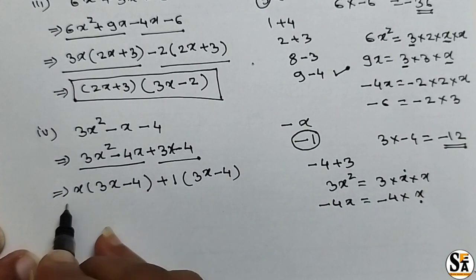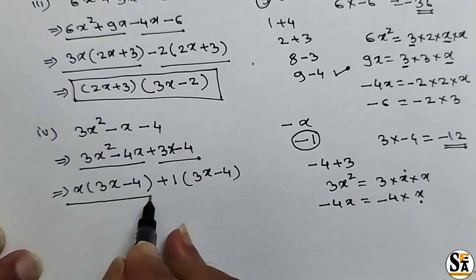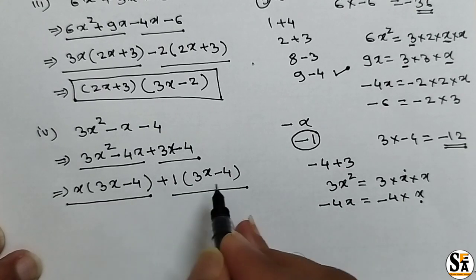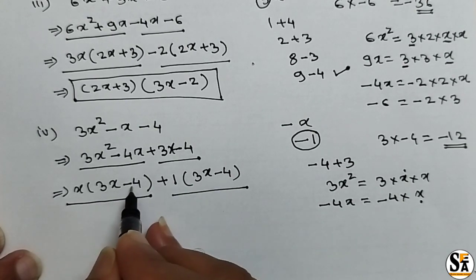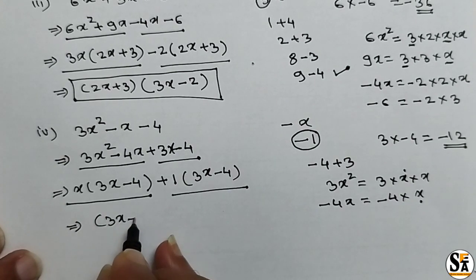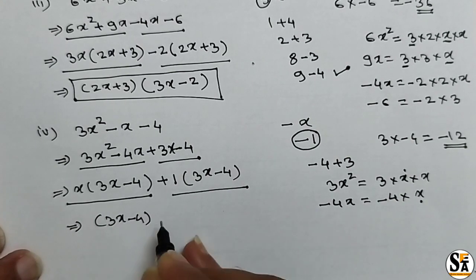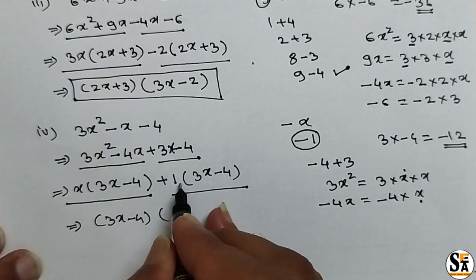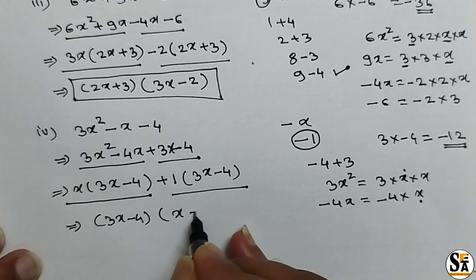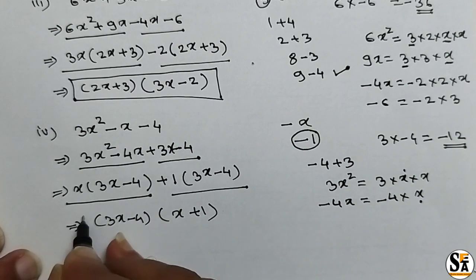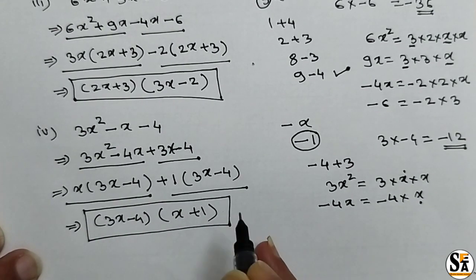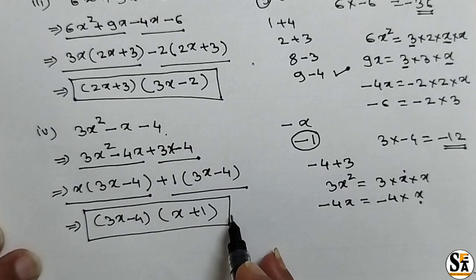From the second group, nothing is common, so take plus 1 as common, and write 3x minus 4 as it is inside the bracket. Now 3x minus 4 is common in both groups. Take 3x minus 4 outside the bracket; remaining terms are x from the first group and plus 1 from the second. So the final factors for this polynomial are 3x minus 4 and x plus 1.